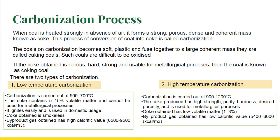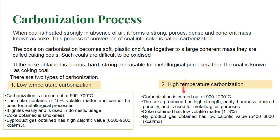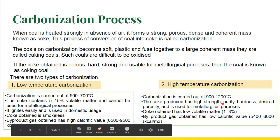So, the coke formed by low temperature carbonization is not suitable for metallurgical purposes, while the coke formed by high temperature carbonization is used for metallurgical purposes because of its high strength, purity, and hardness.